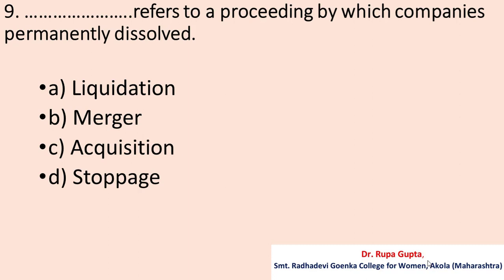Question number nine: 'Dash' refers to a proceeding by which companies permanently dissolve. Option A: Liquidation. B: Merger. C: Acquisition. D: Stoppage. The correct answer is A, liquidation.